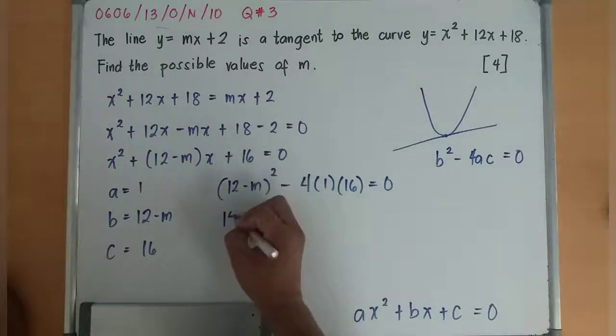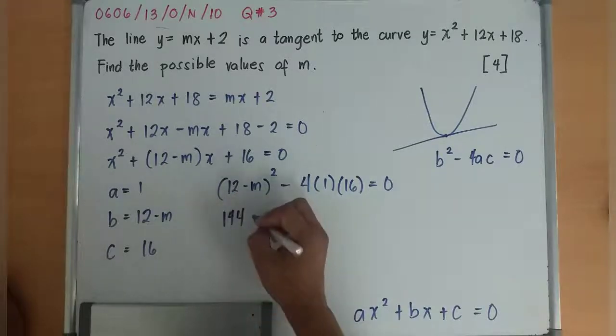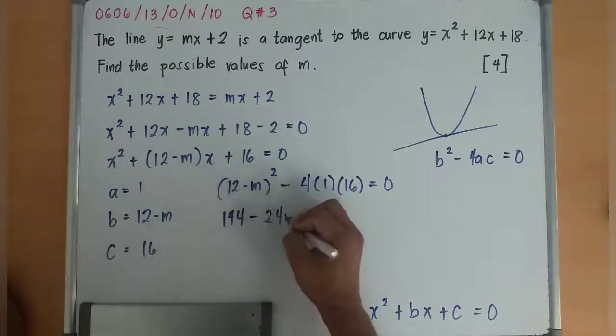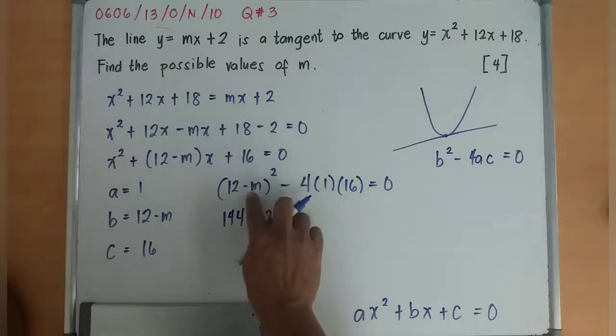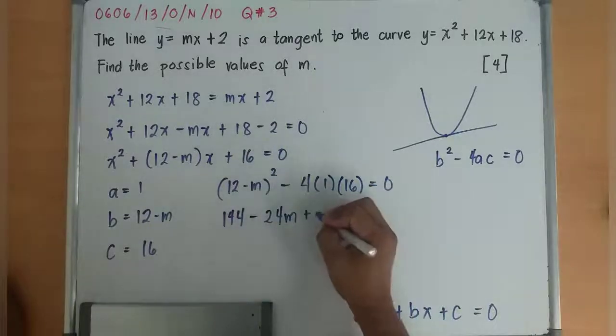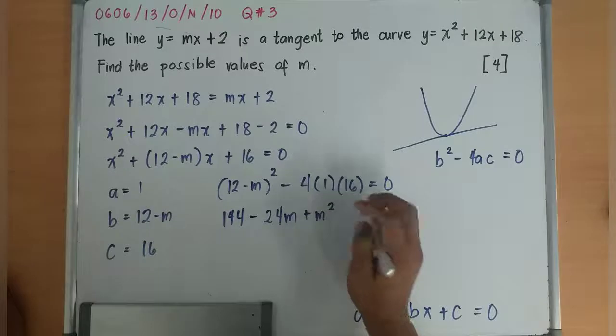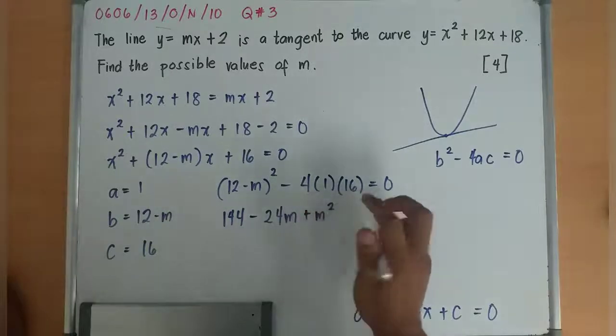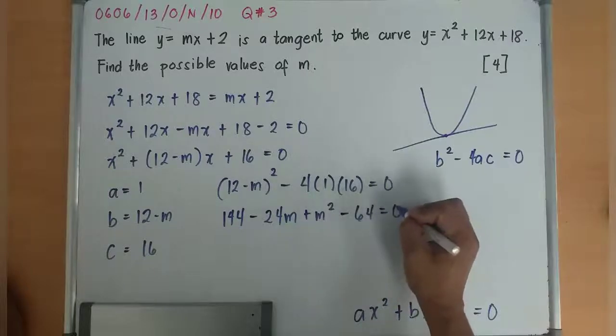I'll expand this. 12 squared is 144, 2 times 12 is 24 times negative m is -24m. Then m squared. 4 times 16 is -64, equal to 0.